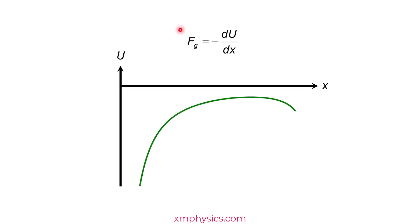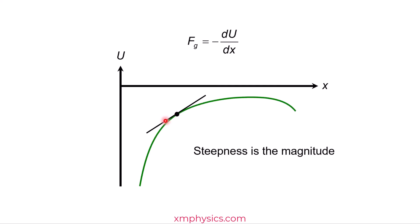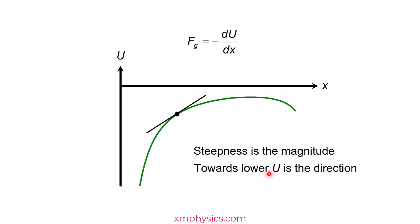So this is the math. What is the physics? Suppose we have a graph that shows you how your GPE varies at different positions. The dU/dx part of this formula is telling you that at any position, the steepness of the graph tells you the magnitude of the gravitational force you experience at that point. The negative sign is telling you the direction of the gravitational force — it points in the direction in which your GPE is decreasing, because towards lower GPE is the direction of the gravitational force.